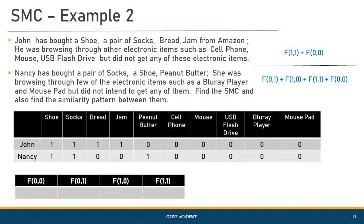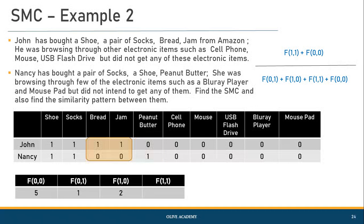Now let's find the numerator and denominator. I see five columns with a 0,0 pattern, so f(0,0) equals 5. f(0,1) equals 1, and f(1,0) equals 2 because John bought bread and jam but Nancy did not. f(1,1) equals 2. Substituting gives 0.7, meaning 70% similarity in the buying pattern between John and Nancy for this example.